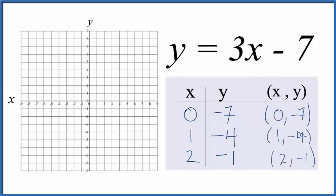So these are the points that we'll graph for this linear equation here, y equals 3x minus 7.